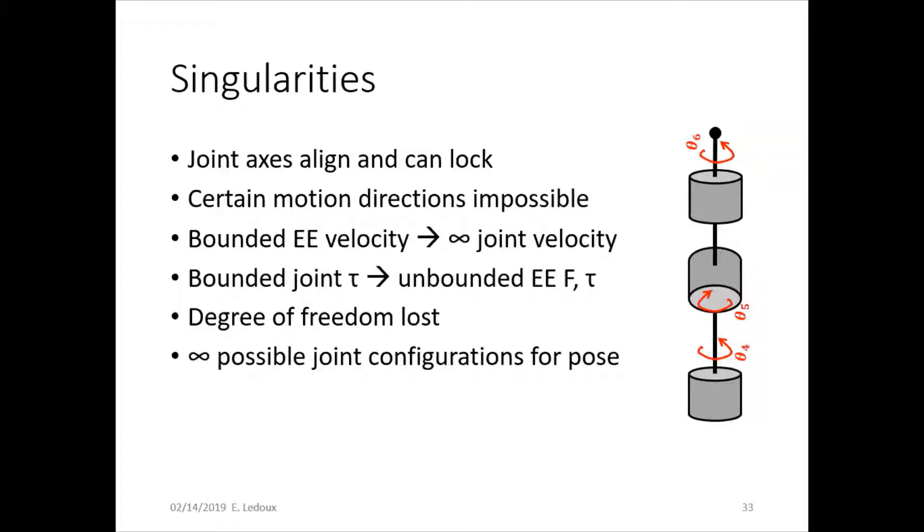Singularities are when the robot loses a degree of freedom. The joint axes can align and lock. Like in the picture that you see here, the theta-4 and theta-6 joints are lined up together, so no matter if one of them turns one way, the other one can turn the other way, and it can still reach the same point. There's infinity solutions to that inverse kinematics problem.